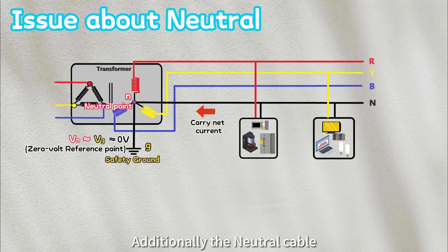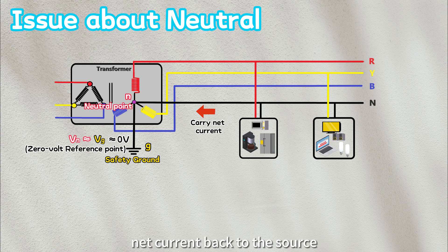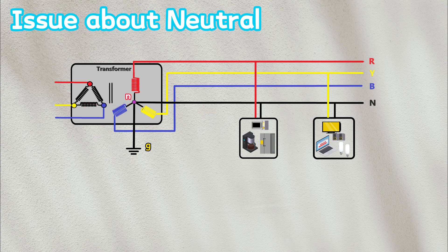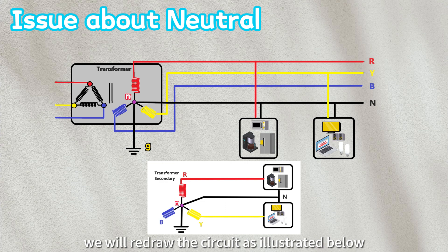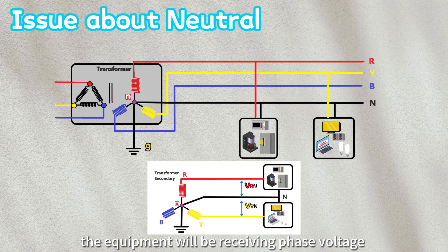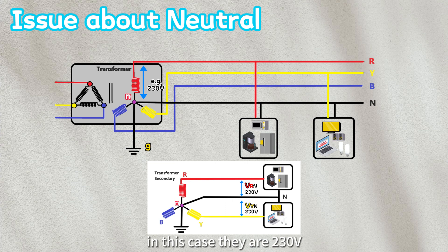Additionally, the neutral cable serves the crucial role of carrying the net current back to the source. For easier understanding, we will redraw the circuit as illustrated below. For example, in normal condition, the equipment will be receiving phase voltage, VRN, VYN, in this case, they are 230 volts.